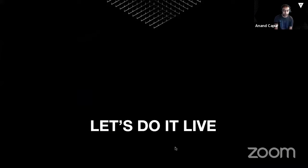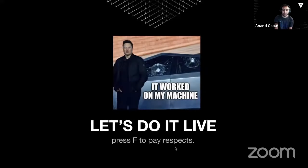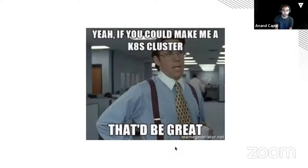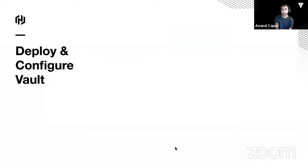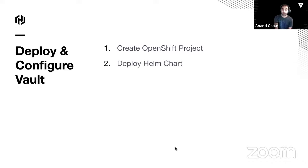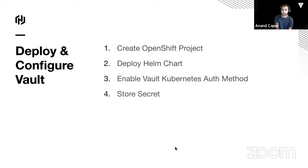I figured we might as well just do it live and show you how it all works in real time. I'm using what's called code-ready containers — basically a way to run OpenShift on your local machine in a VM. The first thing we'll do is deploy and configure Vault in our OpenShift cluster: create an OpenShift project, deploy the Helm chart, enable the Kubernetes authentication method, store a secret, then create a policy and a role so our application can access it.